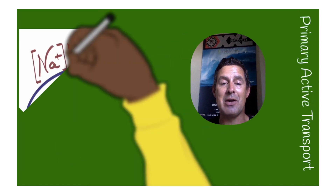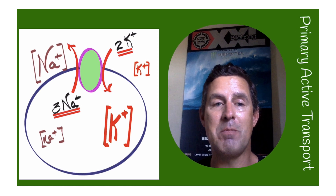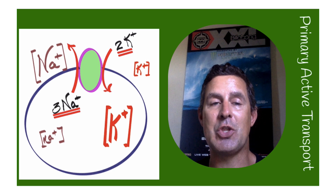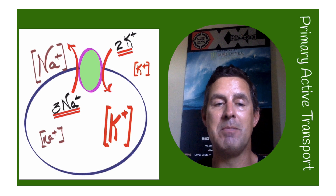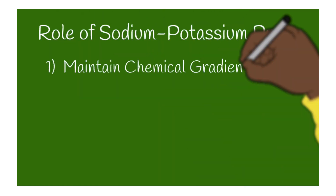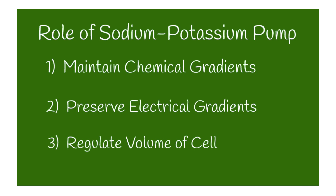The main form of primary active transport in our body is the sodium-potassium pump. The sodium-potassium pump is moving sodium and potassium against their gradients, moving three sodium outside of the cell and two potassium inside of the cell. There are three main roles of the sodium-potassium pump: one is to maintain chemical gradients, another is to preserve electrical gradients, and a third is to regulate cell volume.